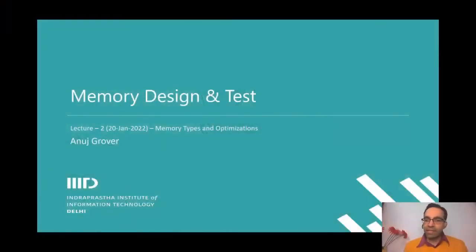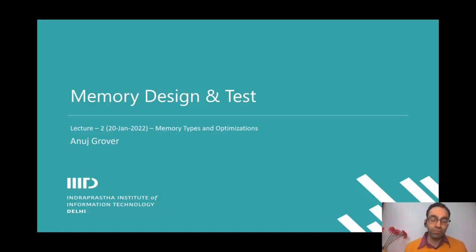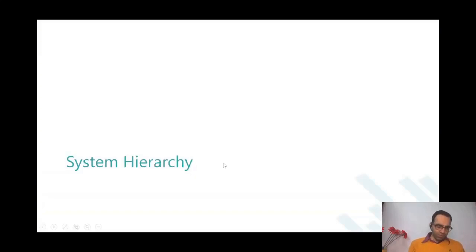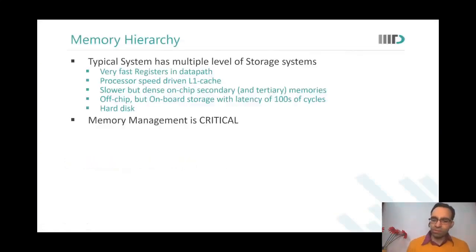Good morning and welcome to the second lecture of the Memory Design and Test course. Today we will look at memory types and optimizations. We will also look at the design flow, or signal flow, inside a typical memory. Subsequently, if time permits, we will also look at one of the data sheets to get a view of what features are usually available inside a memory. But first, why do we need to talk about memories and why all this in the first place?